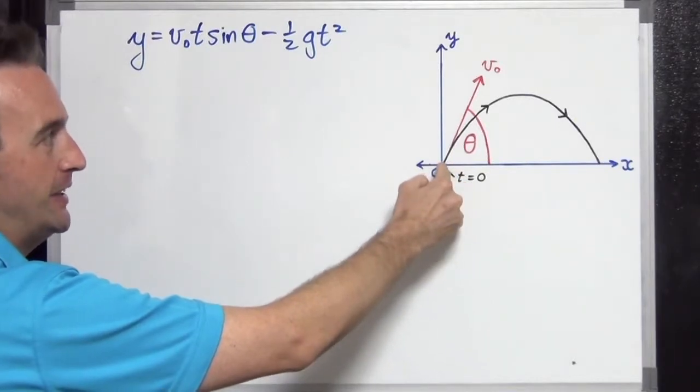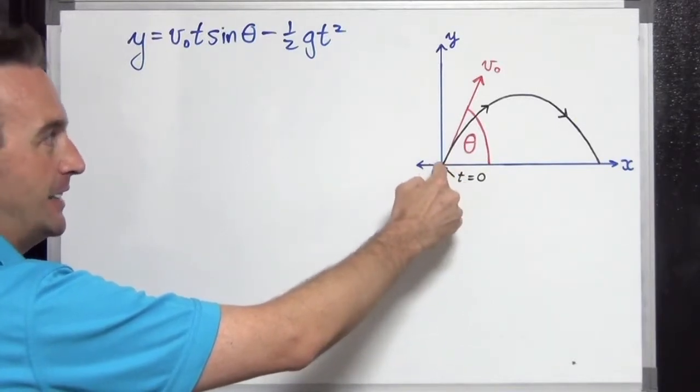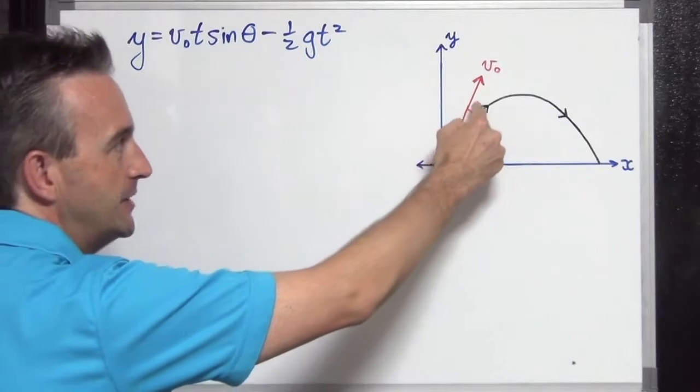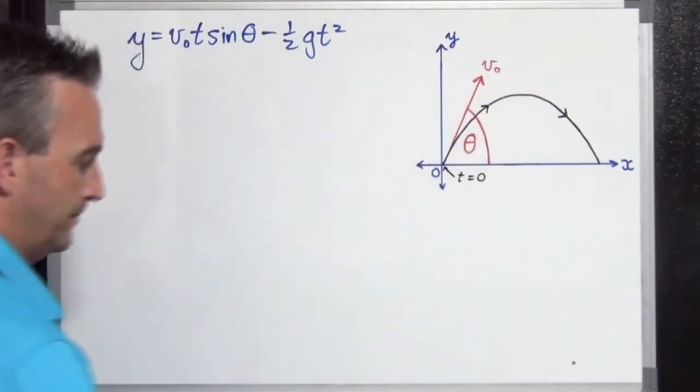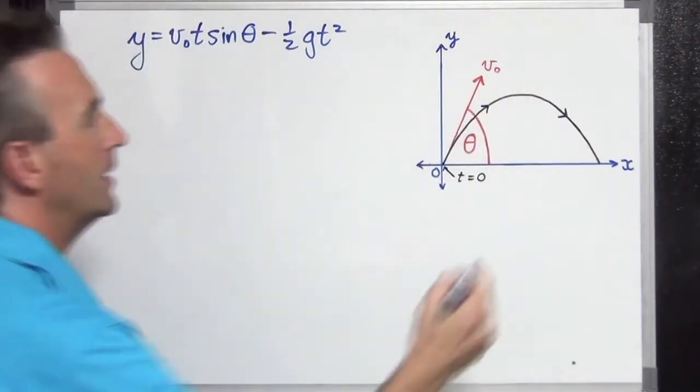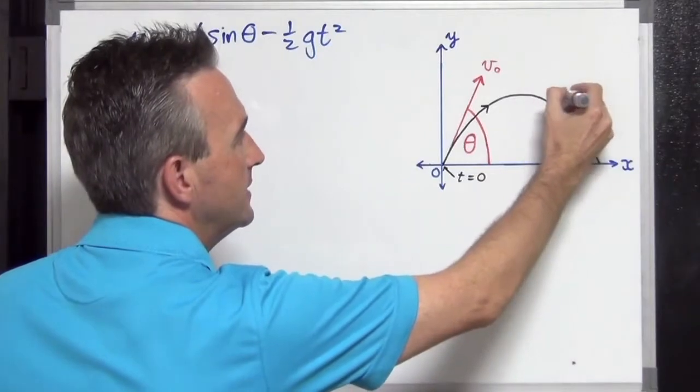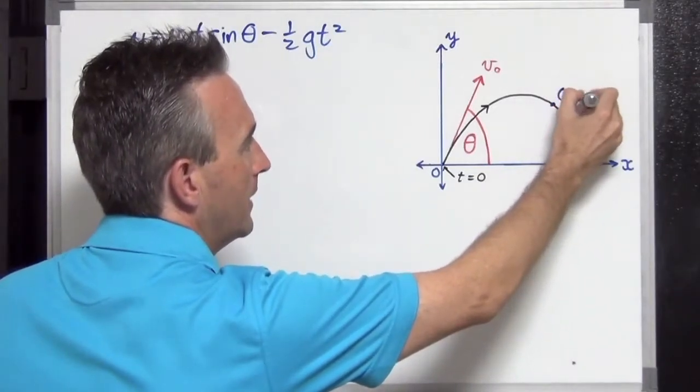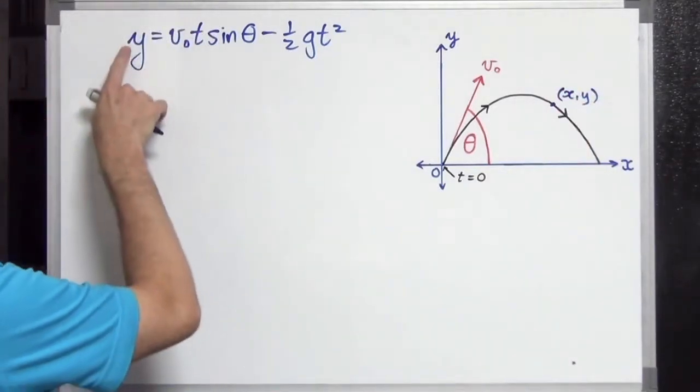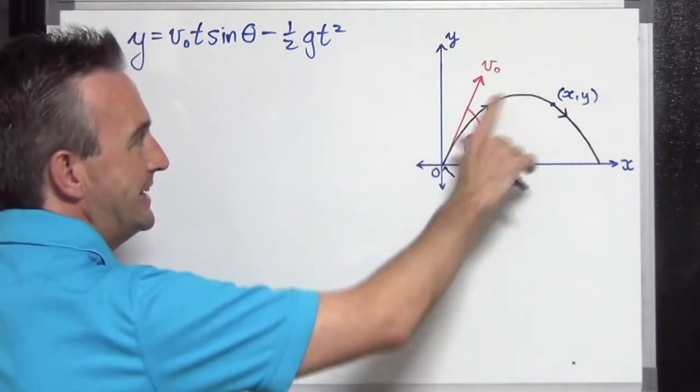As the t values, t starts at zero here, as t increases to one, two, three, it actually flies through this path here. And as we're flying through a path, it actually has a position, x, y. And it's telling us this y value as t increases.